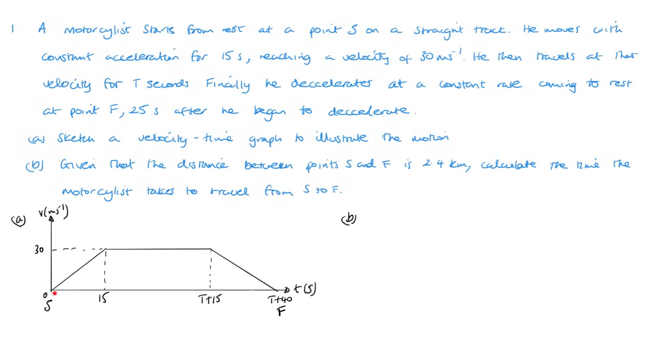So the accelerating part is going to be 15 times 30 divided by 2, which will be 225 meters. Now the decelerating distance would have been 25 times 30 divided by 2, which is 375 meters.